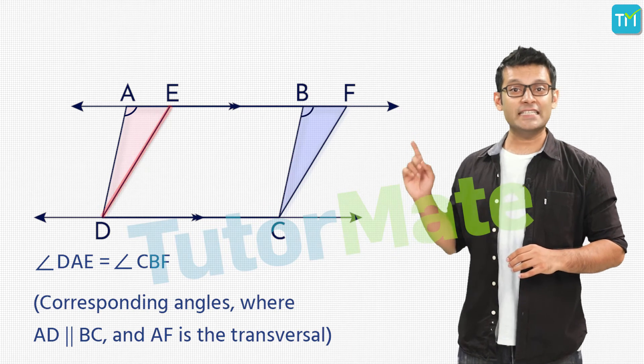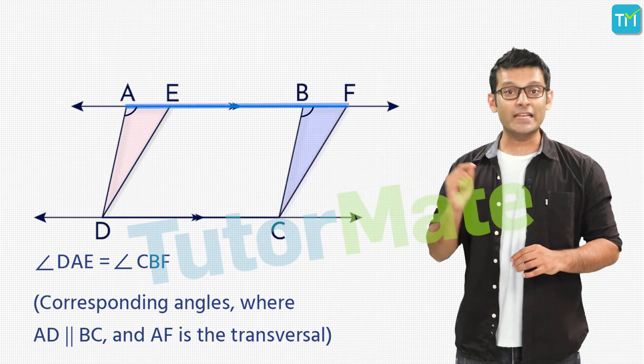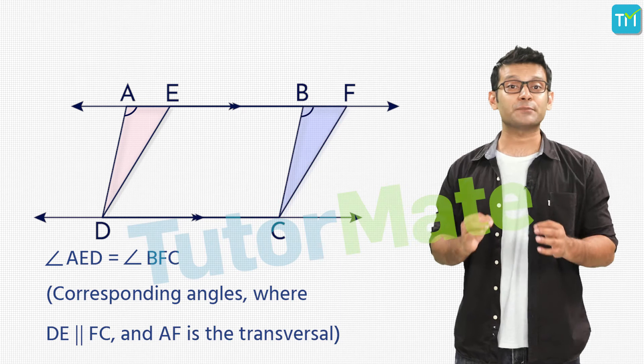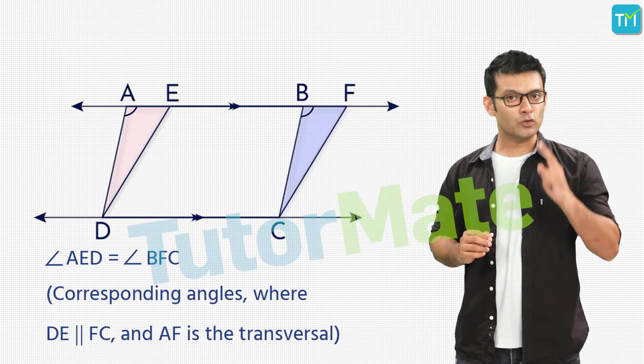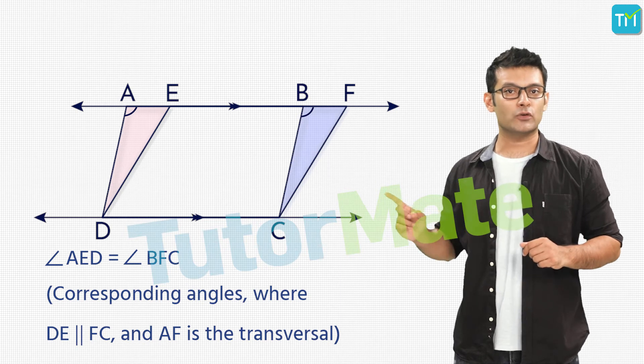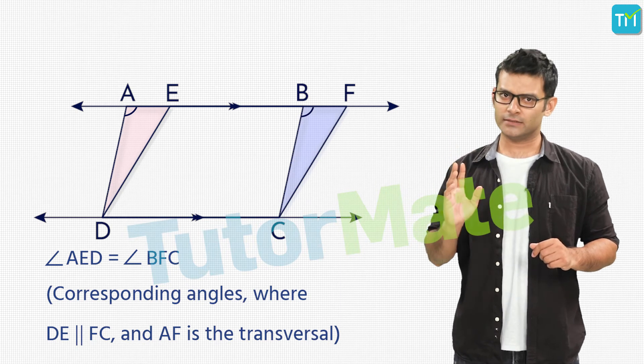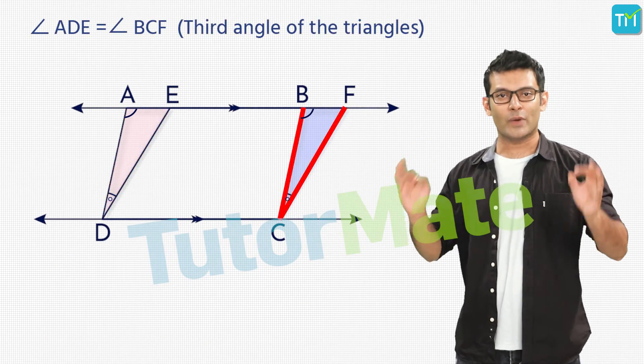Similarly, since ED is parallel to CF and AF is the transversal we will have angle AED and angle BFC as corresponding angles hence they will also be equal. Since two angles of these two triangles are equal the third angle of both the triangles must also be equal. And so angle ADE and angle BCF are equal as well.